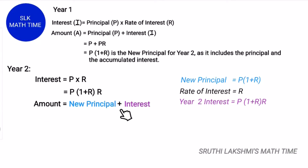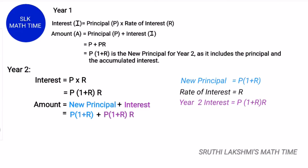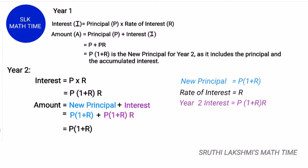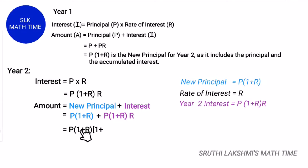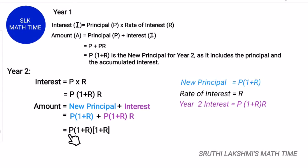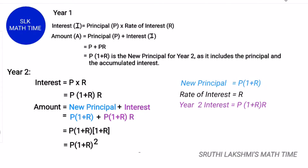The amount is new principal plus interest. The new principal, written in blue, is P into 1 plus R, plus the interest which is P into 1 plus R into R. The common term here is P into 1 plus R, so we take it out and open a bracket: P into 1 plus R into 1 plus R, which gives P into 1 plus R the whole power 2. For year 1 it is P into 1 plus R the whole power 1, and for the second year it is P into 1 plus R the whole power 2.